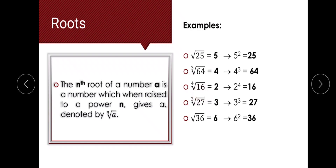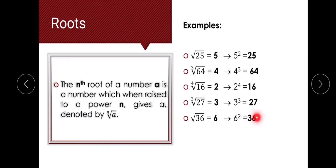The fourth root of 16 equals 2, because raising 2 to the power 4 gives 16. The cube root of 27 equals 3, because raising 3 to the power 3 gives 27. And the square root of 36 equals 6, because squaring 6 gives 36, which leads us back to the number under the radical.